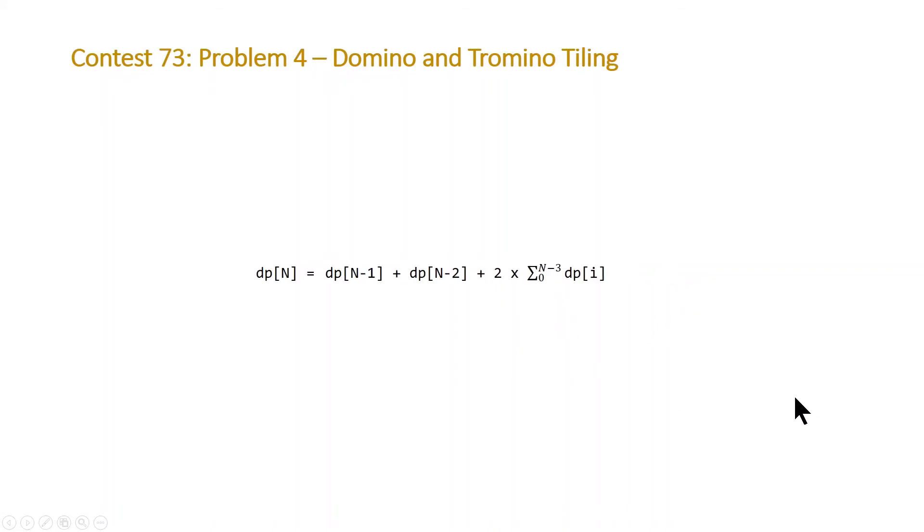And once we do this, we can do a little bit of algebra to simplify our formula. So the first thing we're going to do is take out two n minus 3's from the top or the end of this summation. And that'll give us this.